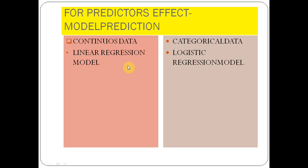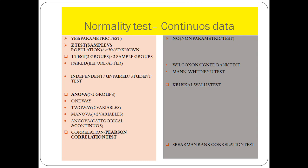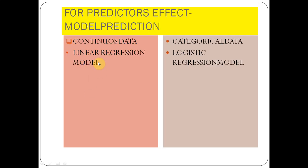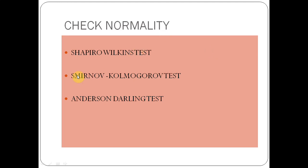Before watching this, I really suggest you watch the normal curve and types of variables videos for a better idea. After this, you'll have a fair idea of what test to use under what conditions, and once you go through many articles it will become much clearer. To summarize: for normality testing use Shapiro-Wilk, Kolmogorov-Smirnov, or Anderson-Darling. For parametric tests: Z-test, t-test, ANOVA. Non-parametric: Wilcoxon signed-rank, Mann-Whitney, Kruskal-Wallis. Correlation: Pearson and Spearman rank. Categorical: chi-square, Fisher's exact, McNemar. Regression: linear and logistic.